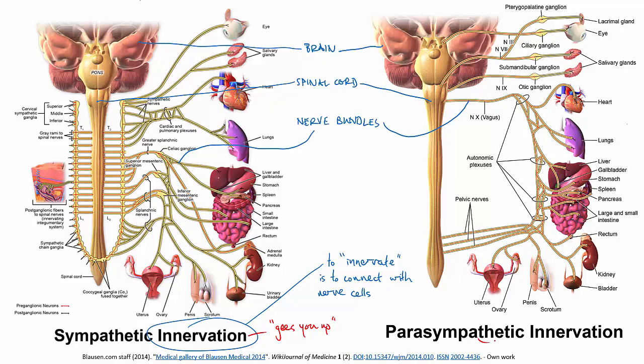If the sympathetic nervous system dials you up, the parasympathetic nervous system dials you down. It comes into play when you're at rest or calming down. It decreases your heart rate, narrows your bronchioles in the lungs, and stimulates your digestive system to get to work on digesting your food, and so on.